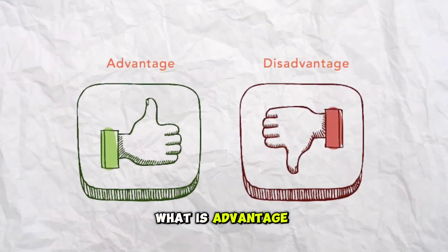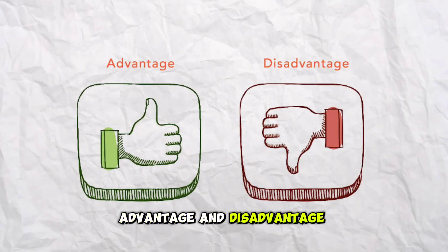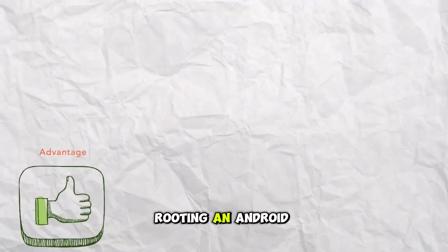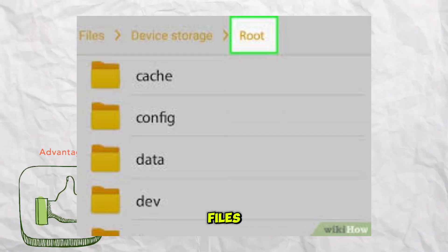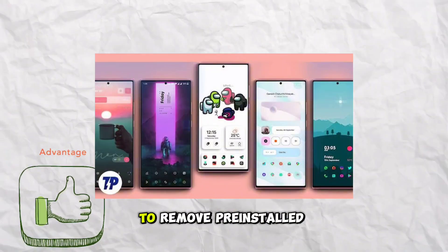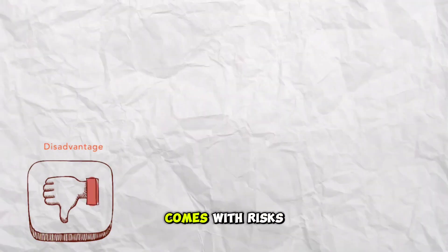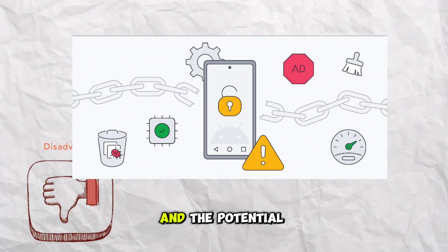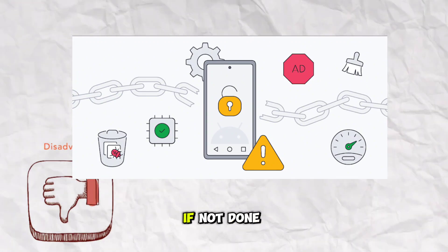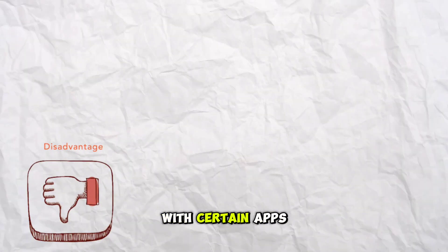What are the advantages and disadvantages of rooting Android? Rooting an Android device can provide advantages such as access to system files, customization options, and the ability to remove pre-installed bloatware. However, it also comes with risks including voiding warranties, security vulnerabilities, and the potential for bricking the device if not done correctly. Additionally, rooting may lead to issues with software updates and compatibility with certain apps.